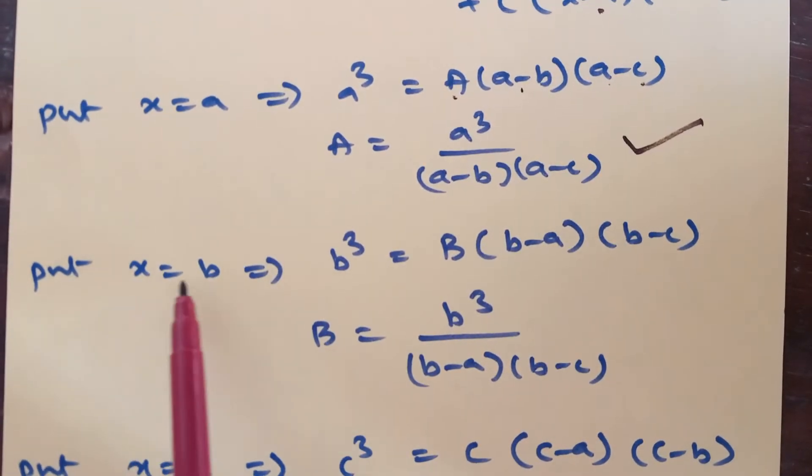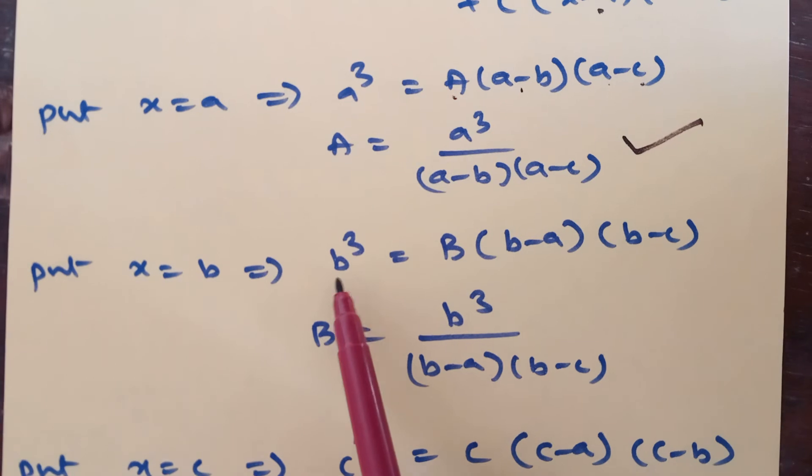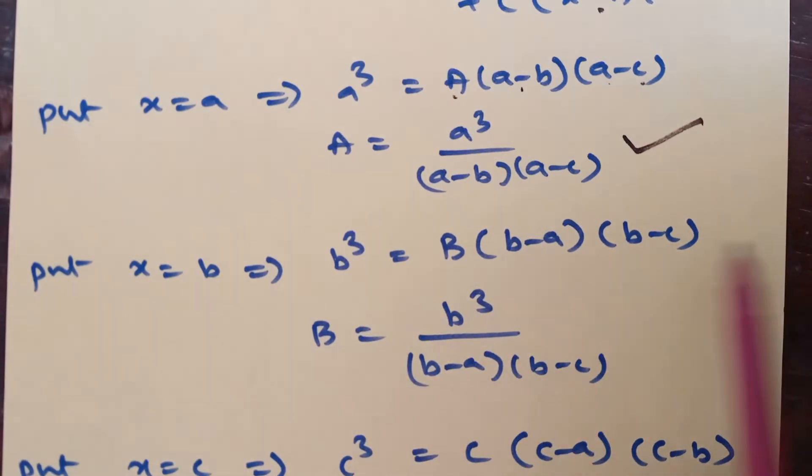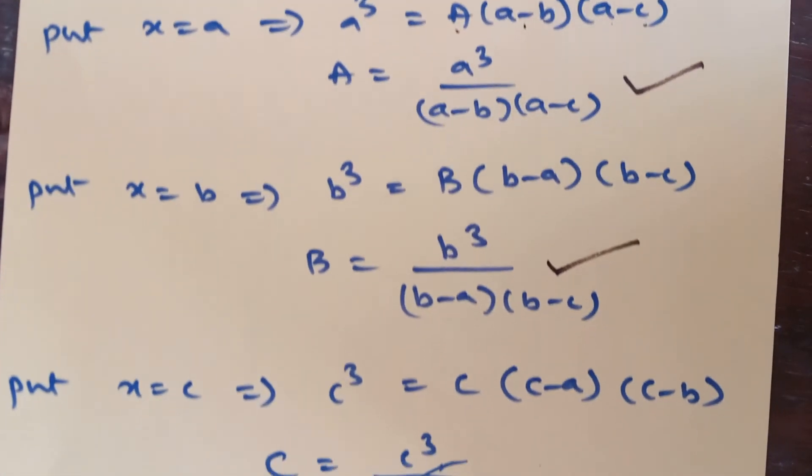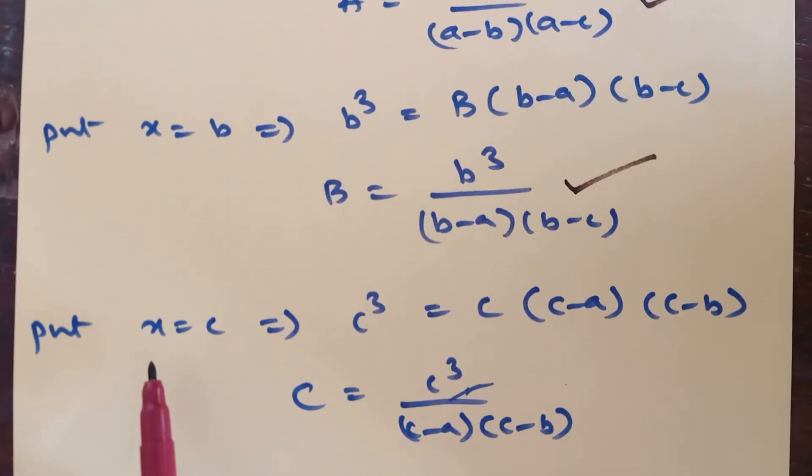Similarly substitute x is equal to b. Left side b cube, right side A and C becomes 0. You will get B value as b cube by b minus a of b minus c.